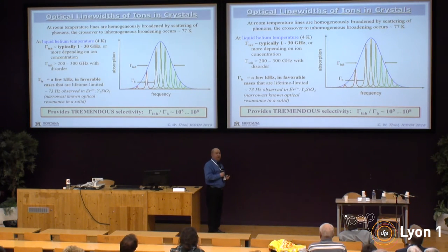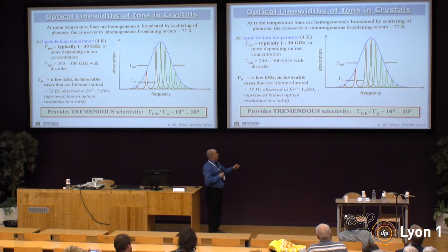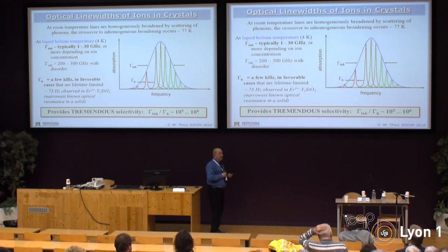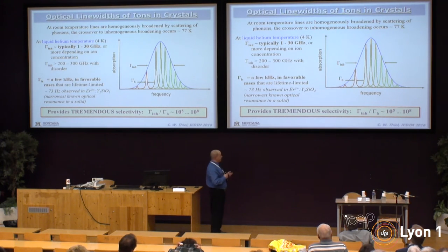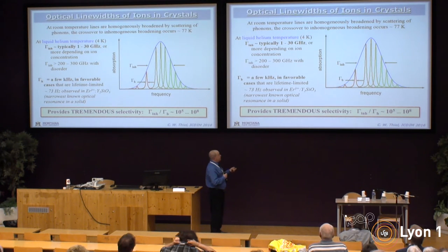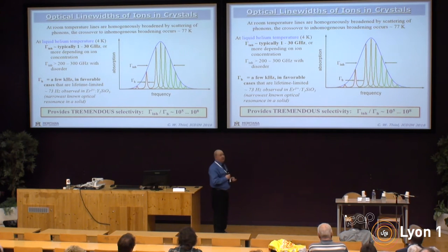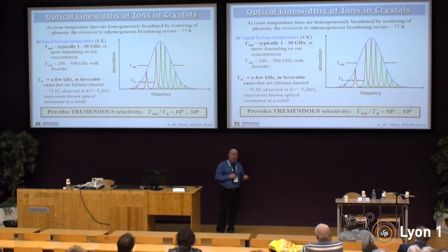All these subgroups of ions exist within the inhomogeneously broadened line. With a narrow enough laser, we can address ions at a particular frequency without talking to ions at other frequencies. This means we have a very large number of spectrally distinct, individually addressable ions in the crystal, giving the material a massive information handling capacity in terms of both parallelism and other properties. In a typical good single crystal, this homogeneous line width can be as narrow as 73 hertz — as narrow as we've measured — up to 200 or 300 gigahertz for a single crystal. This means the number of spectrally distinct subgroups can be as large as 10^8, which represents a very large time-bandwidth product in classical processing terms.